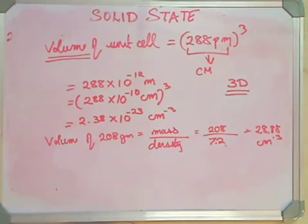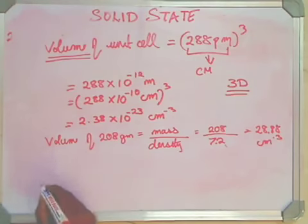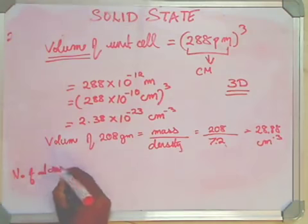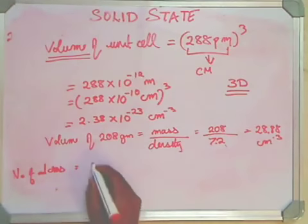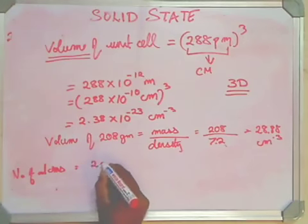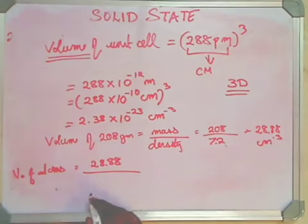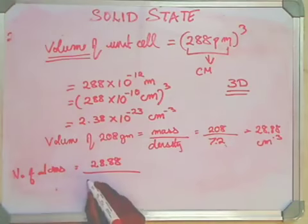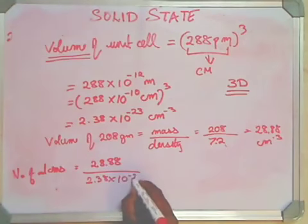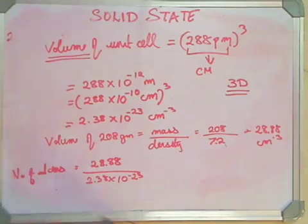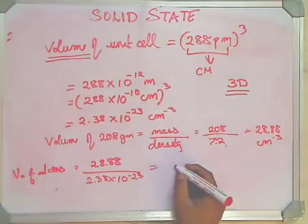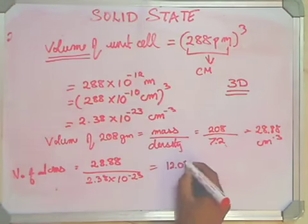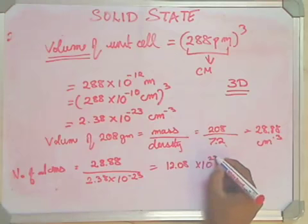This is the volume of 208 grams of this unknown element. We need to find the number of atoms present in 208 grams. To find the number of atoms, you consider the volume of 208 grams, the value which we arrive as 28.88, divided by the volume of every unit cell. Volume of every unit cell is 2.38 multiplied by 10 to the power of minus 23, and thanks to my Casio calculator, I arrive at the value 12.08 multiplied by 10 to the power of 23 atoms.